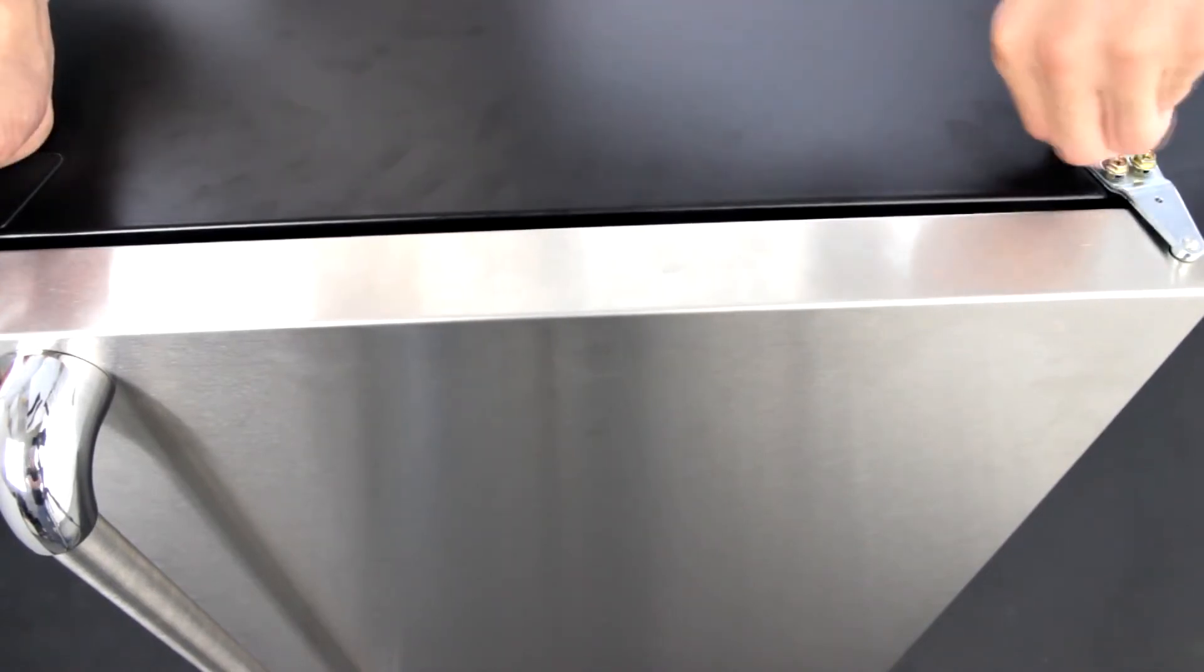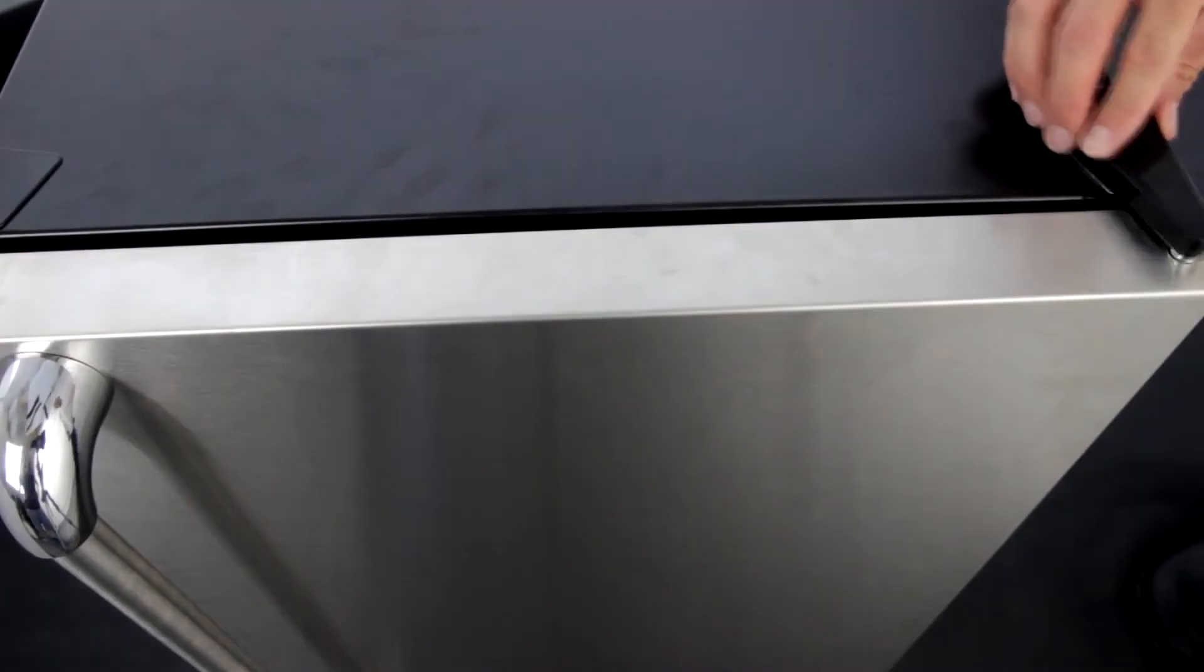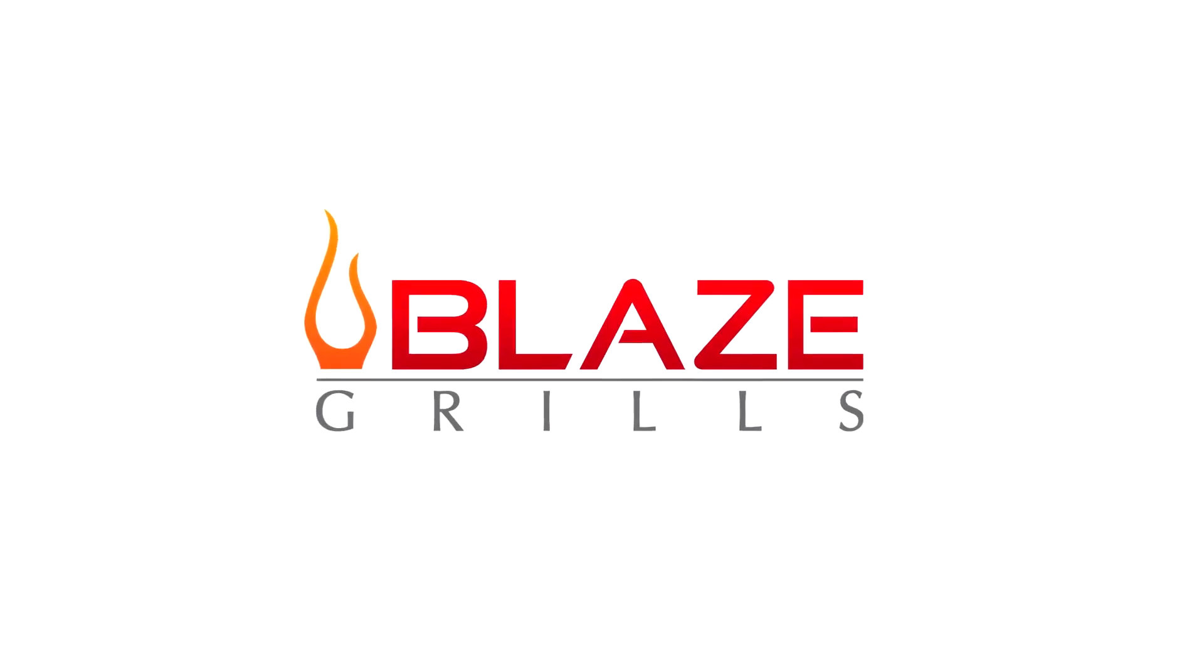Hand tighten the four screws, and once in place, completely tighten. Finally, replace the hinge concealer cap.